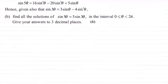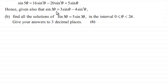Hi there. In the previous part of this question we were asked to show that sin5θ equals 16sin⁵θ minus 20sin³θ plus 5sinθ. For this part we're also given that sin3θ is identical to 3sinθ minus 4sin³θ. We need to find all solutions of sin5θ = 5sin3θ in the interval 0 ≤ θ < 2π radians, giving answers to 3 decimal places.